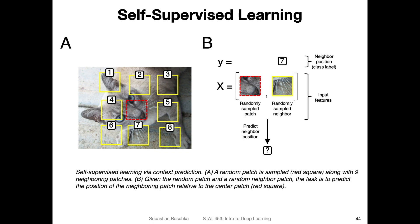Another case of self-supervised learning comes from the image domain — computer vision. For example, you want to train a classifier to classify cats and dogs, but you don't have many labeled examples. So you want to use unlabeled images. Here, you don't know what's in the image because you don't have labels, but you can still use the images. What you can do is divide the image into smaller patches — for example, dividing it into nine parts. You take out one part and predict whether another part is a neighboring tile or not.